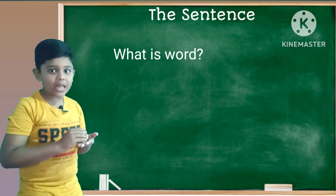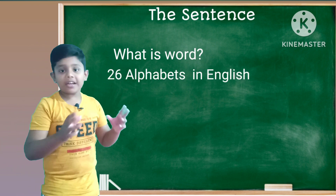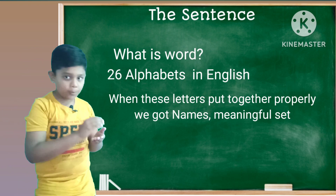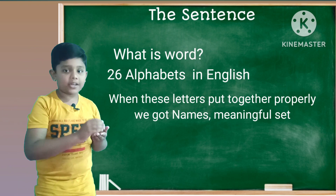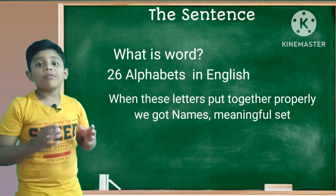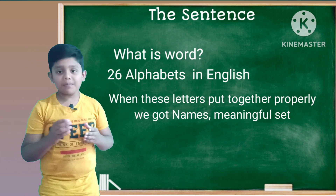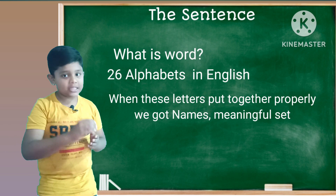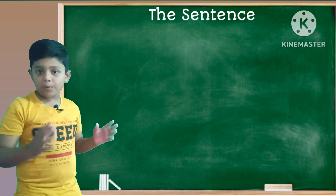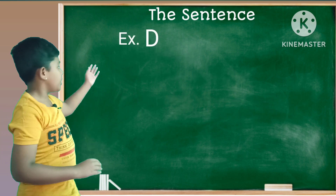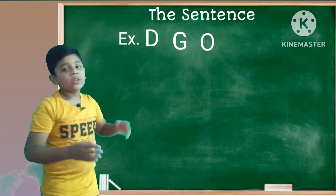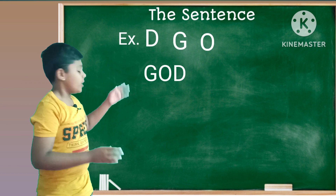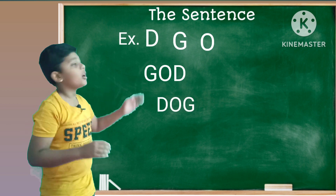Friends, as we know that there are 26 alphabets in English. When we put some of these letters properly, we get names and meanings — we call that a word. For example, when we put the letters K, G, O in a particular way, we get the word 'God', and sometimes 'dog' also.